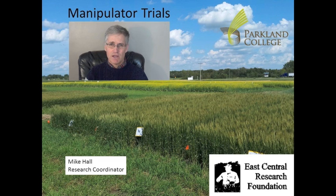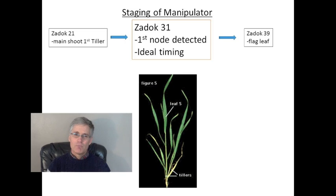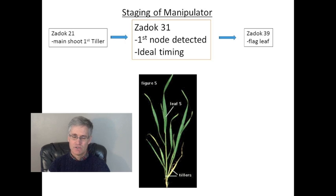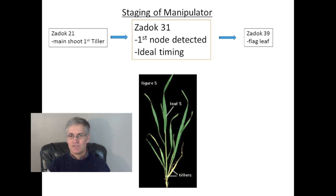Manipulator is safer than other plant growth regulators on the market because it has such a wide window of application. It can be applied from the growth stages known as Zadok 2-1 to Zadok 3-9 — essentially from about the four-leaf one-tiller stage, which is herbicide timing, to the flag leaf stage, which is fungicide leaf disease timing. Unfortunately, the ideal timing is considered to be Zadok 3-1 right in the middle, just when plants are starting to bolt and you can detect the first node.